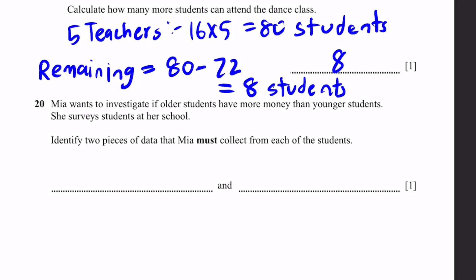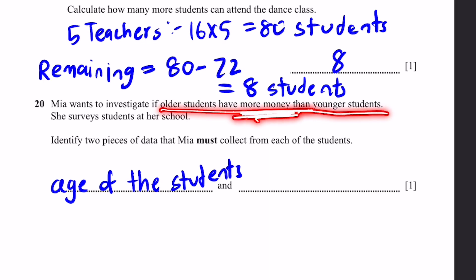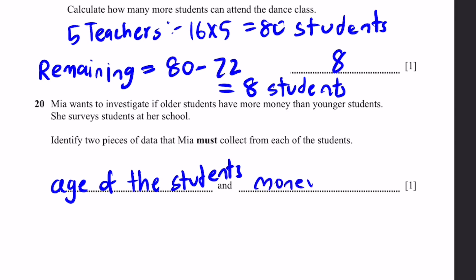Question 20. Mia wants to investigate if older students have more money than younger students. Identify two pieces of data she must collect. First, she needs the age of the students. Second, she needs to find out the amount of money each student's family has.